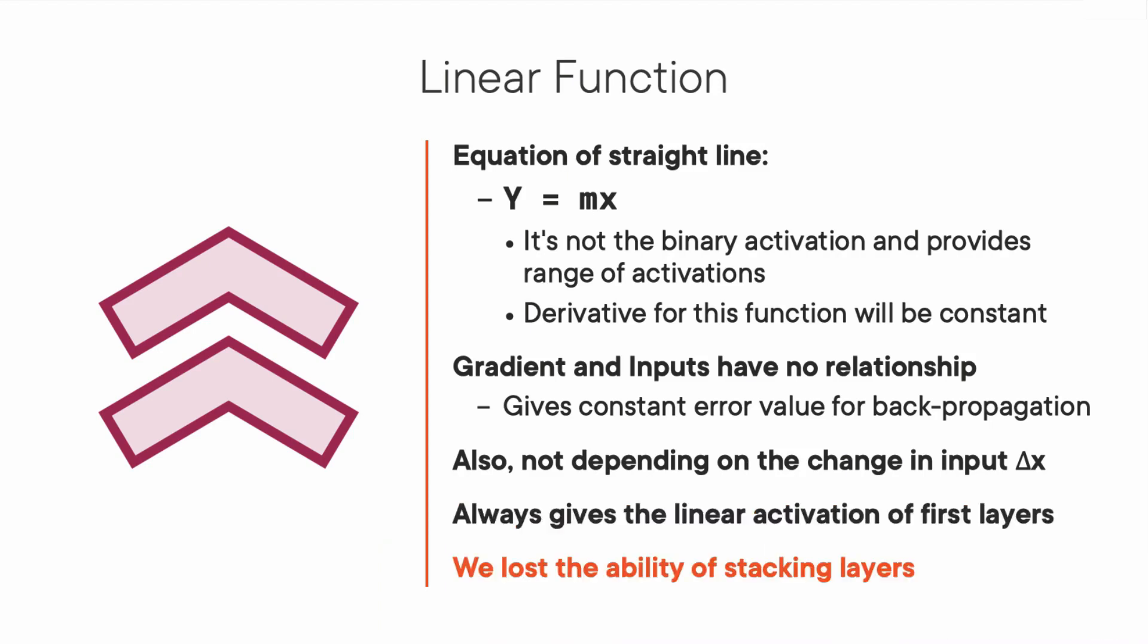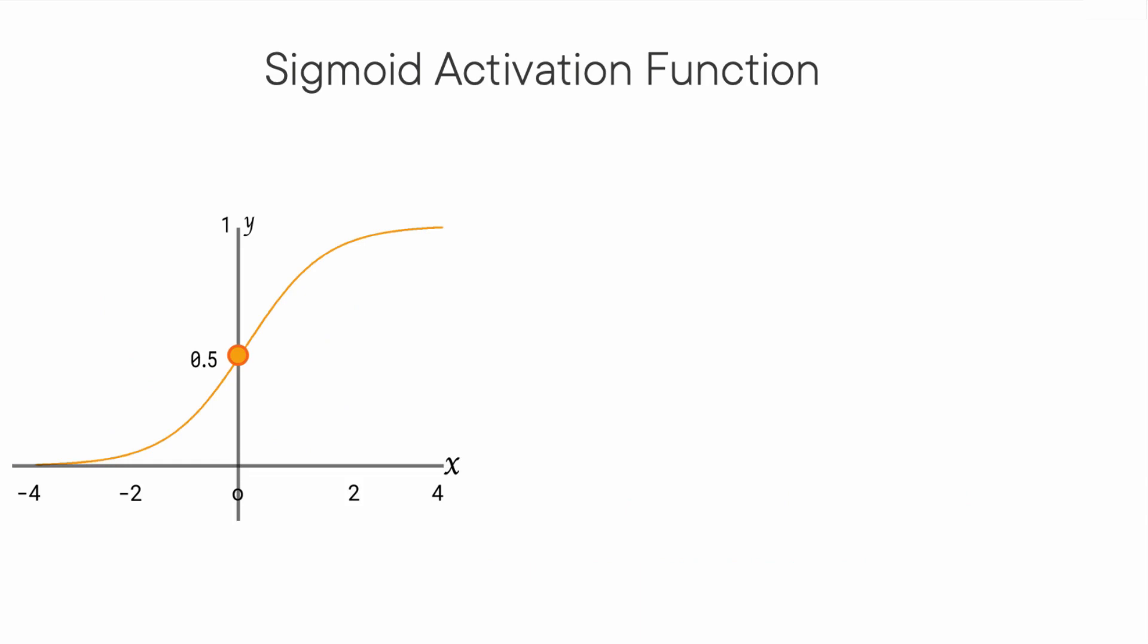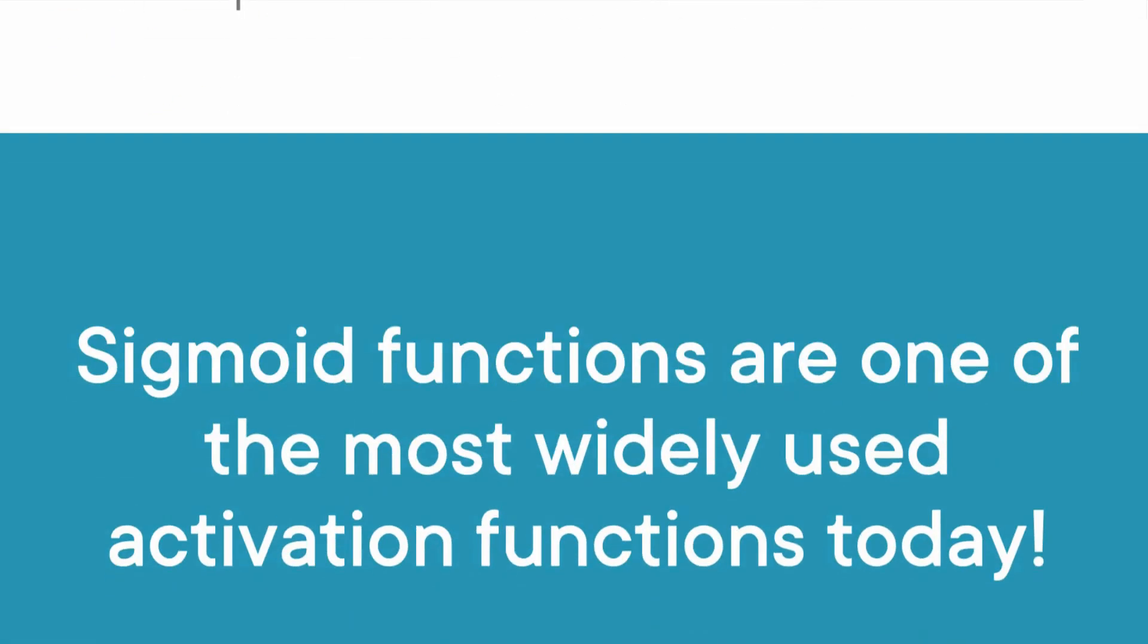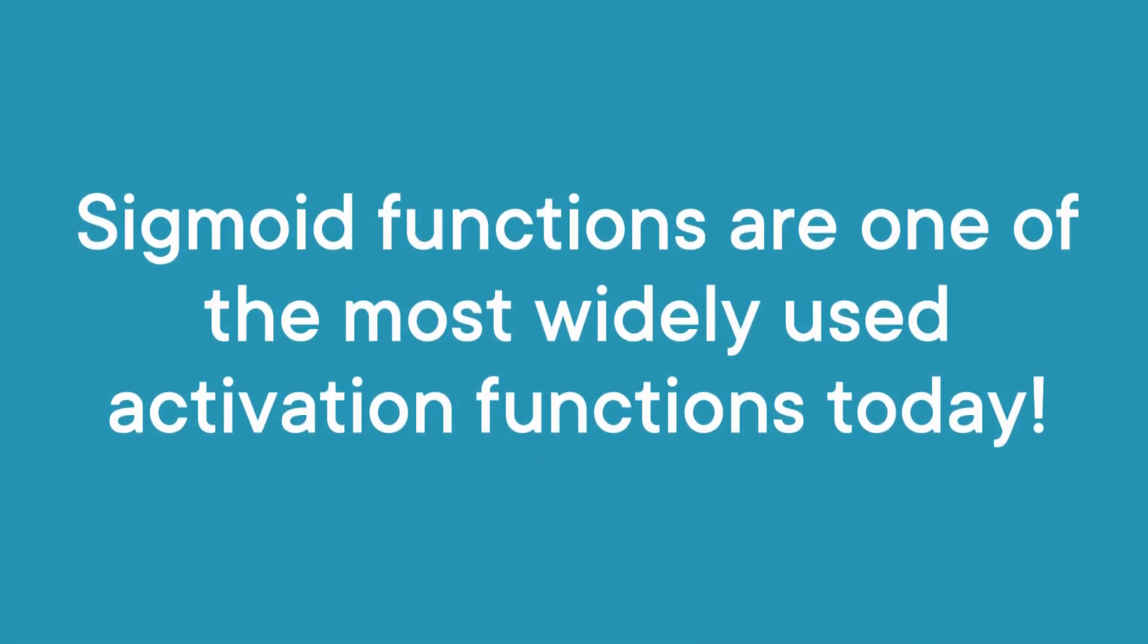At this place, the sigmoid function comes into the game. First, it is nonlinear in nature, so the combinations are too. It means now we can stack layers, solving that problem. If you notice, it will give an analog activation unlike step function. It has a smooth gradient too. Sigmoid functions are one of the most widely used activation functions today.